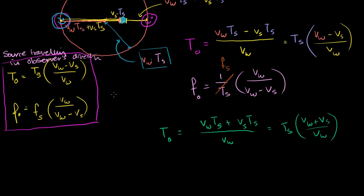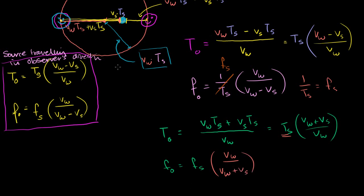If you want the observed frequency for that observer where the source is traveling away from him, it's just the inverse of the period. So 1 over t sub s is the frequency of the source, and taking the inverse gives us the observed frequency: the frequency of the source times v sub w divided by (v sub w plus v sub s). These are the two extreme cases — source moving toward the observer, and source moving away from the observer.